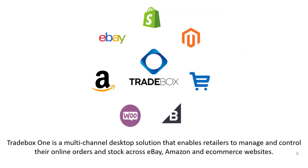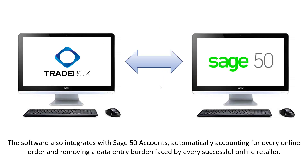Traybox One is a multi-channel desktop solution that enables retailers to manage and control their online orders and stock across eBay, Amazon and e-commerce websites. The software also integrates with Sage 50 accounts, automatically accounting for every online order and removing a data entry burden faced by every successful online retailer.